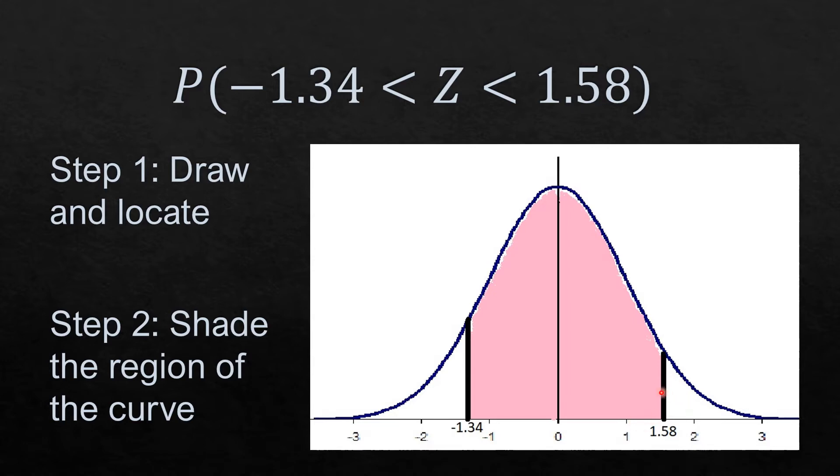Since we are looking for Z is greater than negative 1.34 but less than 1.58, the shaded portion is the in-between.